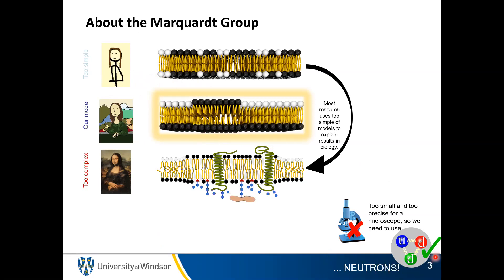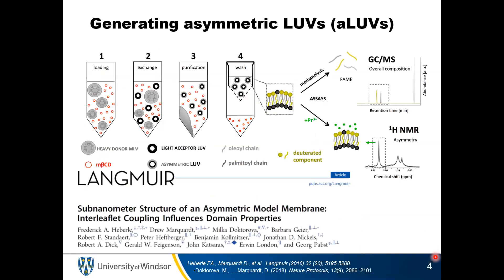We primarily do this using neutron scattering, because these structures are too small to see with a traditional optical microscope. One of the systems of particular interest — where you get this nice compromise between complex and simple — is looking at asymmetric membranes. We have asymmetric large unilamellar vesicles, meaning lipid sacs where the lipids themselves are organized in an asymmetric fashion. There's been a lot of push for this in the last two decades.